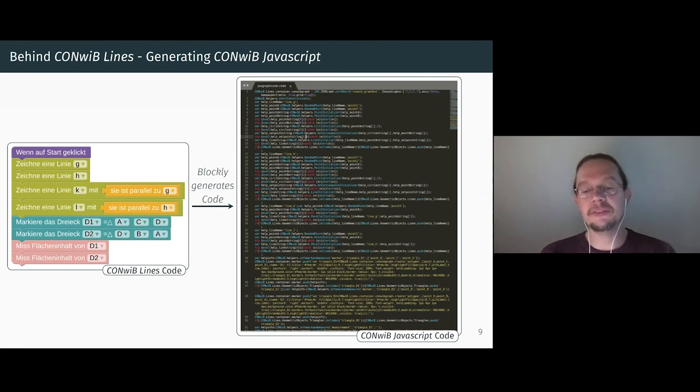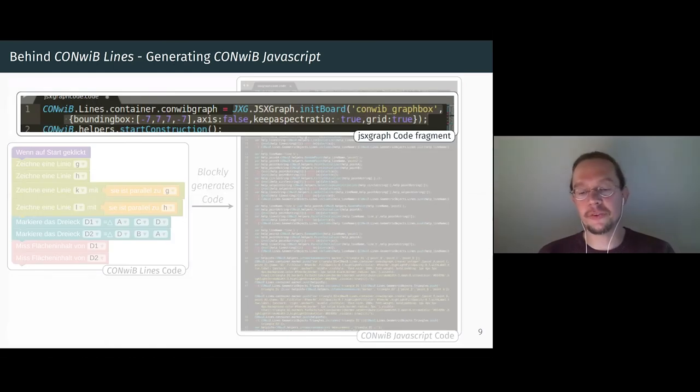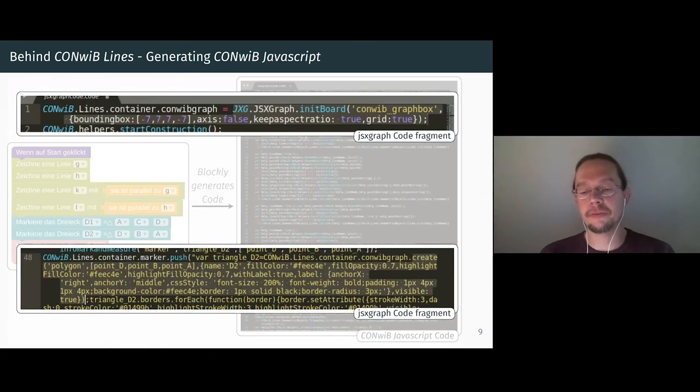However, even in this code, we find familiar syntax from JSXGraph library. Here, in the first line, the initialization of the board. And further down, we find the JSXGraph code used to mark the triangle D2. Here, you see create polygon by the points D, point B, and point A, and some properties collected in the curly brackets.